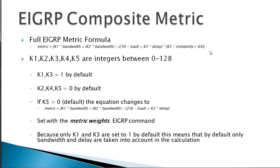So nothing fancy there, nothing more than integers between 0 and 128. They are not equal to bandwidth, delay, reliability, or load. They're just numbers that get multiplied by those values. Now by default, with EIGRP, K1 and K3 are going to be set to 1 in this equation. K2, K4, and K5 are set to 0 in the equation by default.